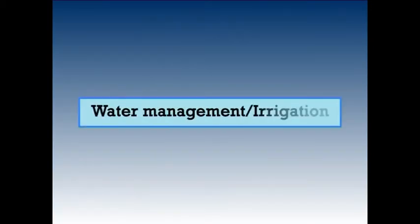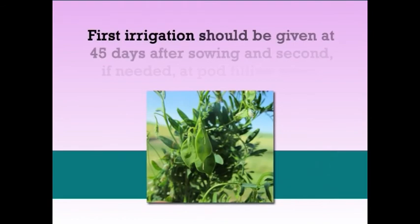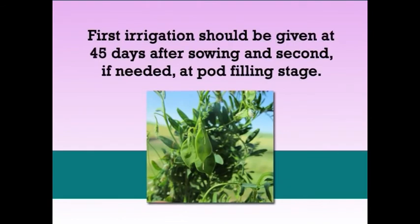The most critical stage for moisture stress in lentil is pod formation, followed by the initiation of flowering. Providing one or two irrigations, particularly when winter rains are not properly distributed, can help obtain higher yields. The first irrigation should be given at 45 days after sowing, and the second, if needed, at pod filling stage. More irrigation may affect the crop performance adversely.